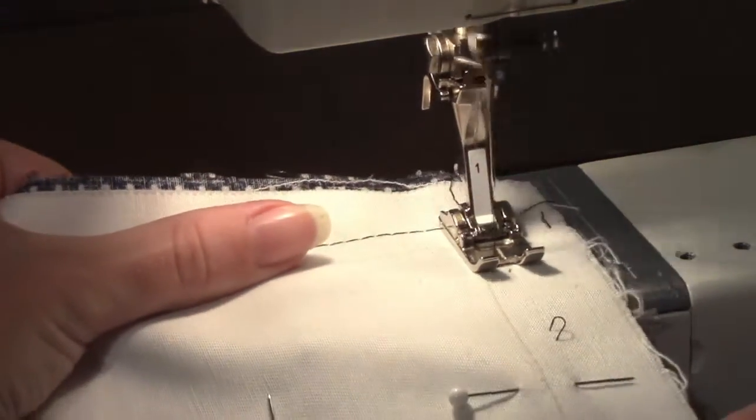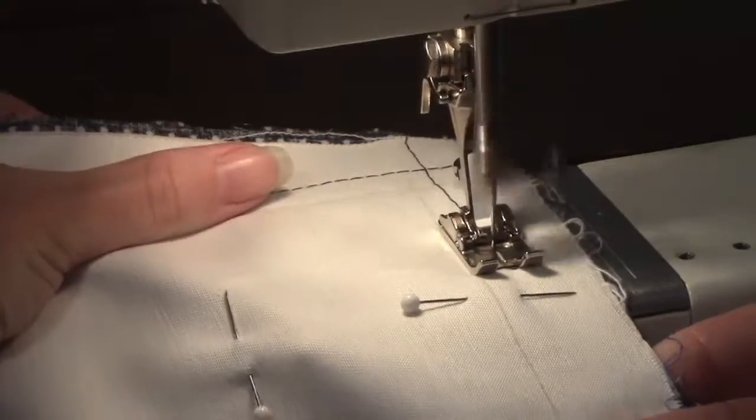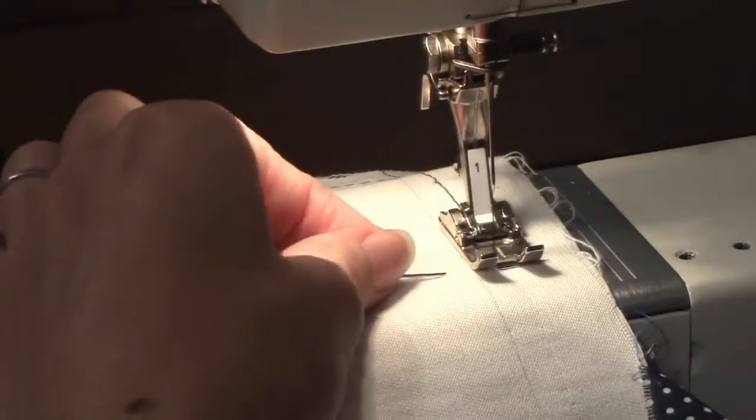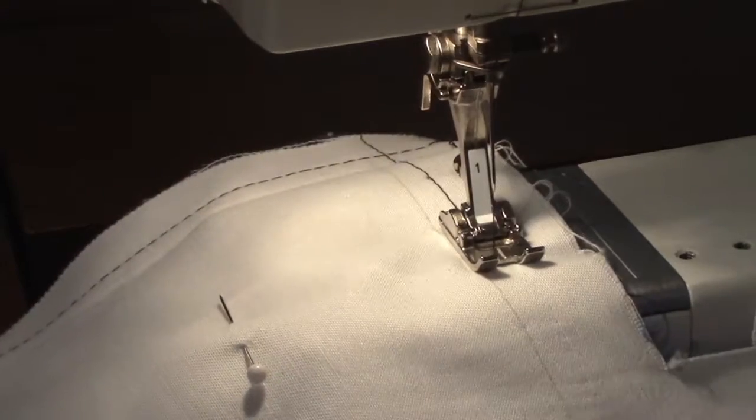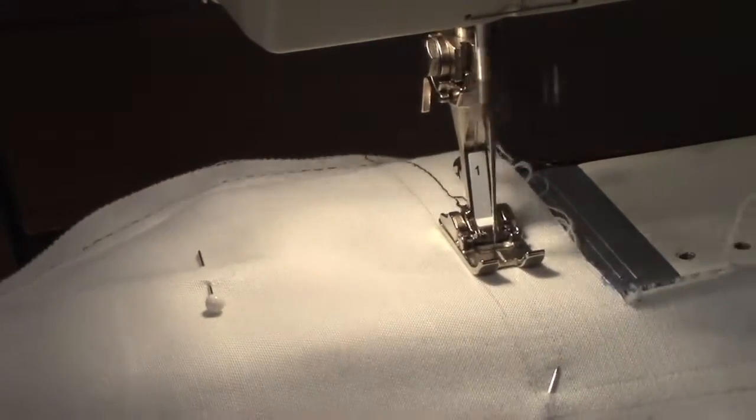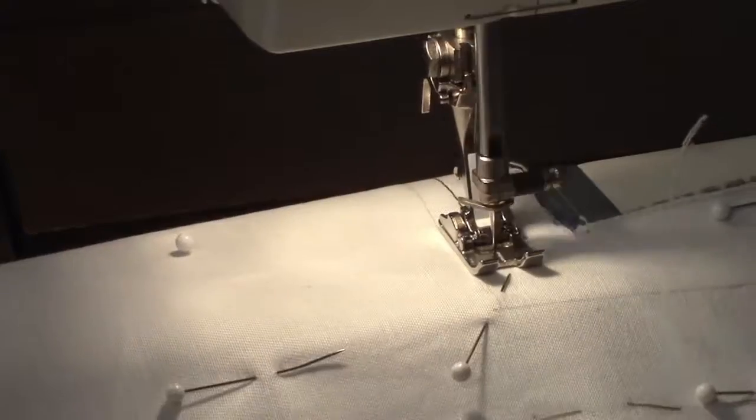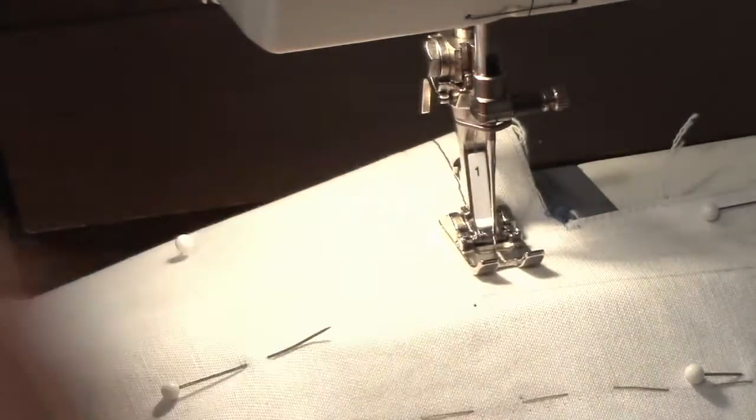Continue sewing using the edge of the presser foot and the stitch line as a guide. You should be sewing a quarter inch away from the stitch line. Sew until you reach the other edge of the fabric. Do not turn any corners except for the inner corners around the bag bottom where you have no other choice.